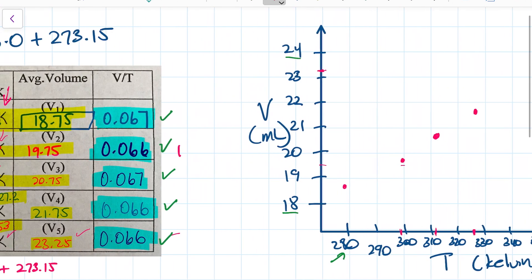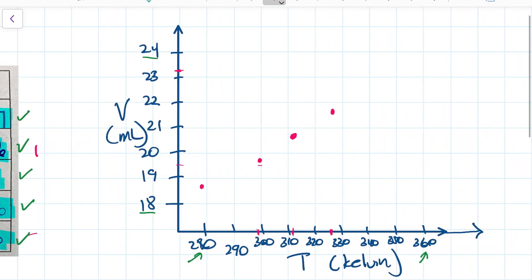And then last but not least, I have 353 with 23.25. So 23.25 is about here, and I'm going to do that with 353. 353 is about here.